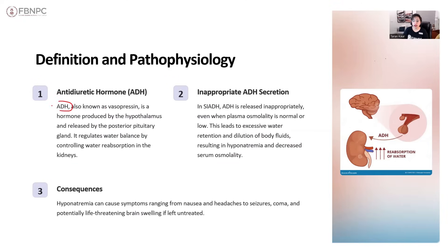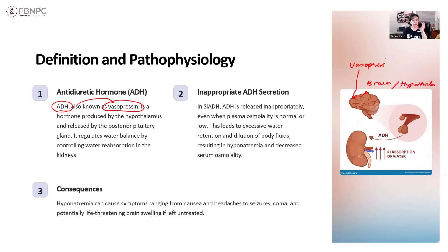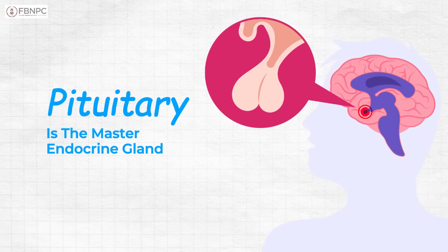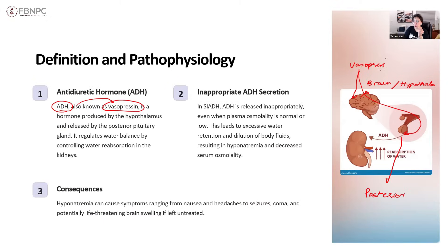Antidiuretic hormone has another name — we call it vasopressin. This vasopressin is actually produced in the patient's brain, specifically in a special area called the hypothalamus. Then this vasopressin is stored in the posterior part of the pituitary. You should know that the pituitary is the master endocrine gland. So vasopressin is produced in the hypothalamus, goes to the posterior pituitary, which stores it and releases it whenever required.